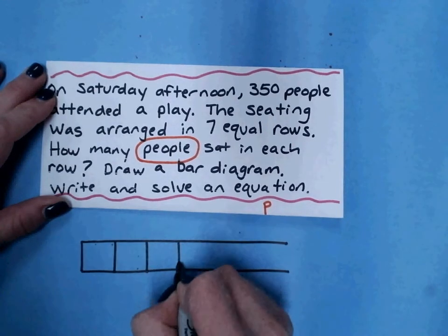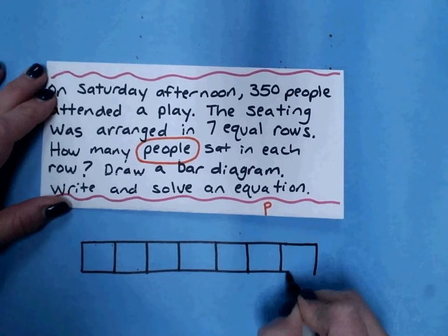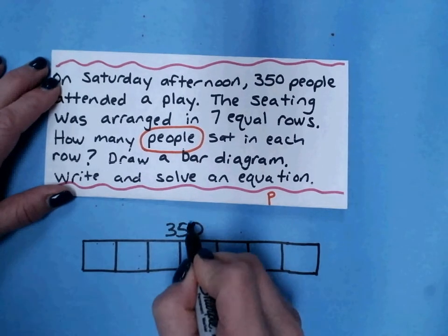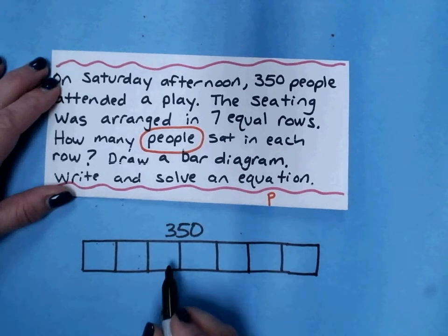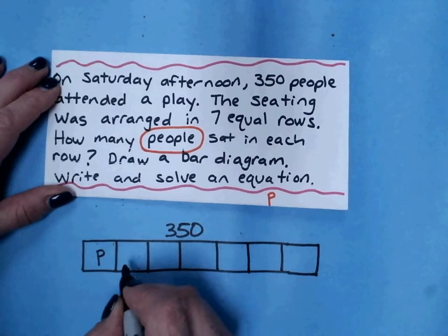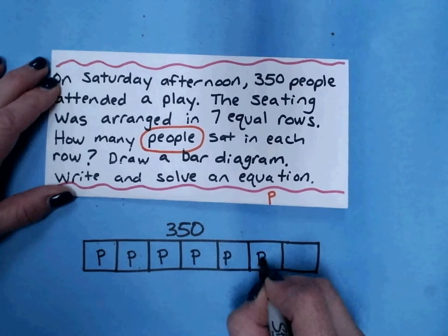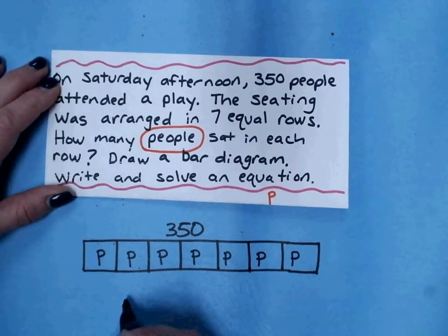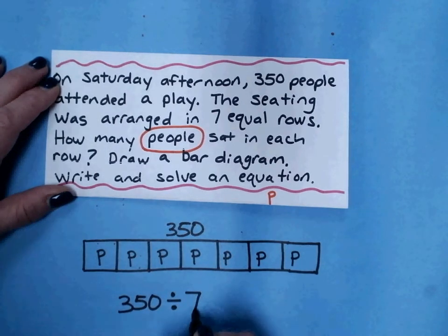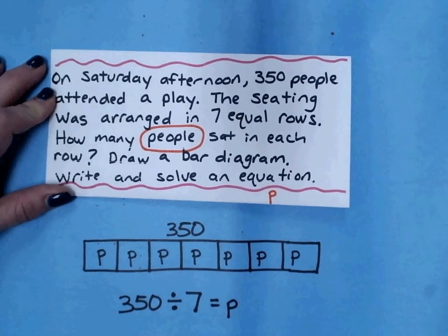I've got 1, 2, 3, 4, 5, 6, let me make this a little bit longer, 7. And the 350 will go on top. And each one of these boxes represents a row. I want to know how many people are in each row. So I want to know how many people P are in each of these rows.